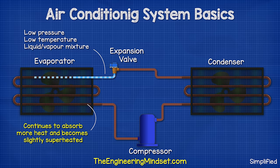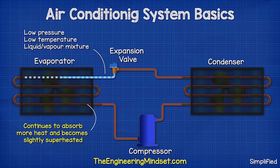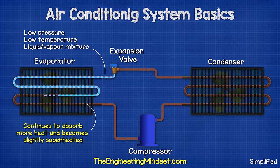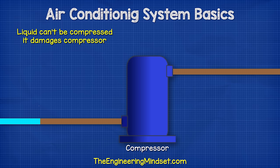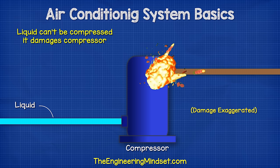The refrigerant continues to travel through the evaporator, picking up more heat, which boils it further until it becomes slightly superheated. This basically means it's now completely gas, and doesn't contain any droplets of liquid refrigerant. Liquid damages the compressor, so we want to ensure it can't reach the compressor.